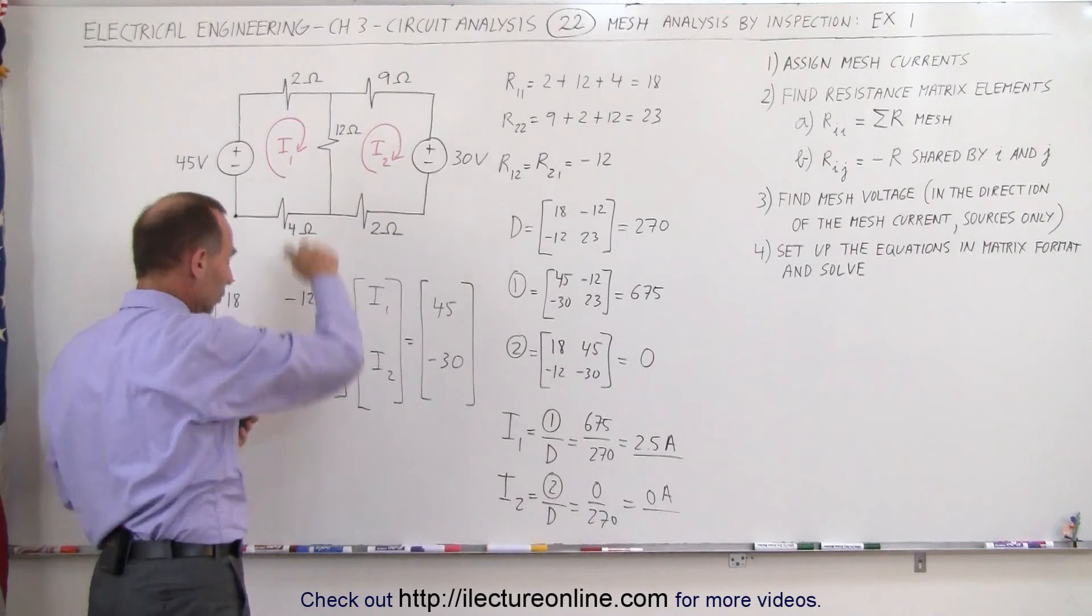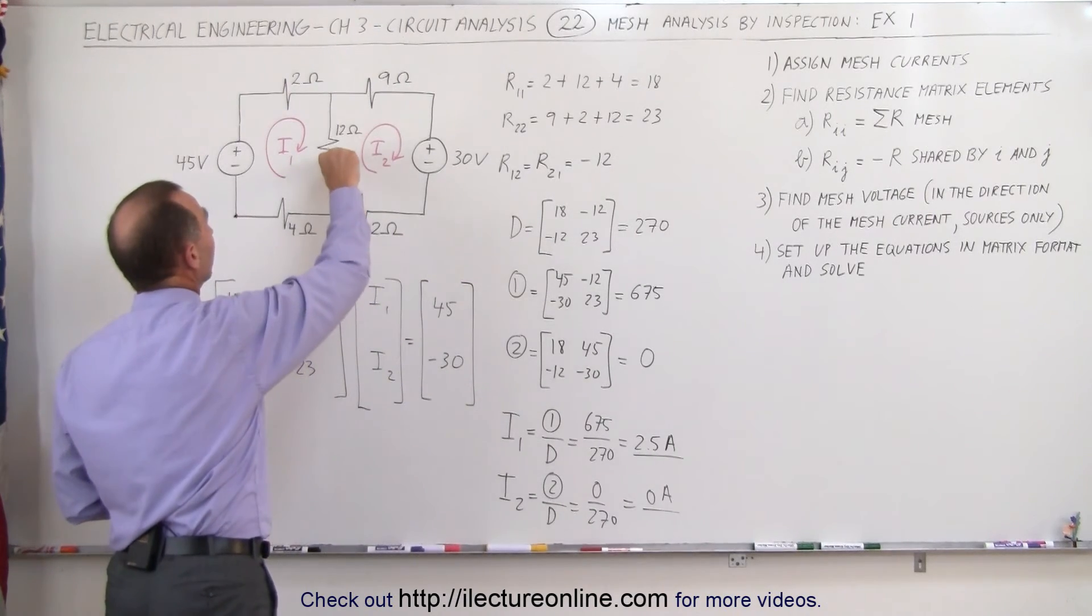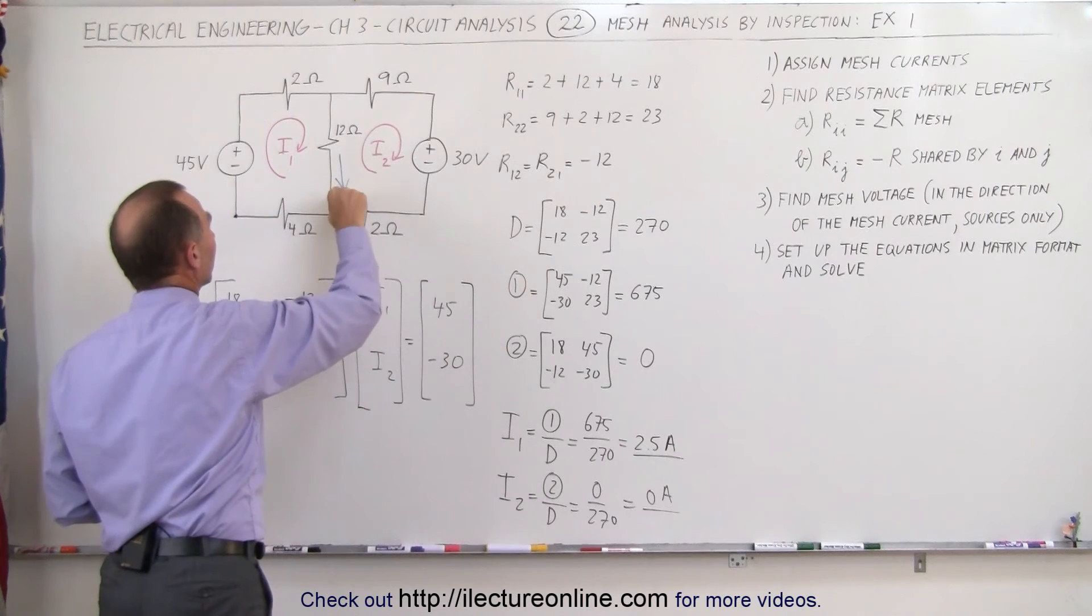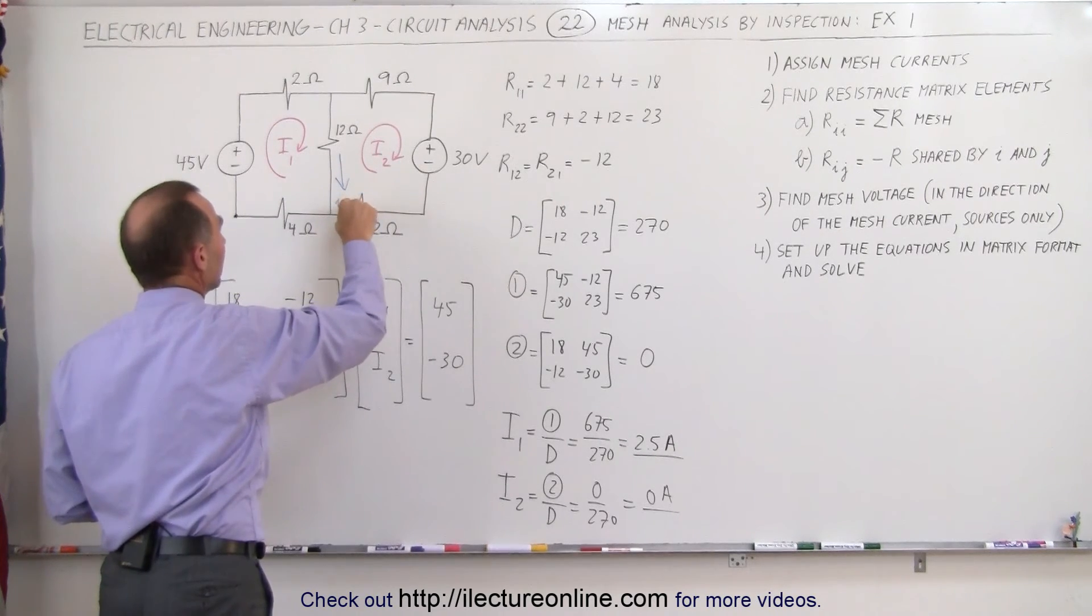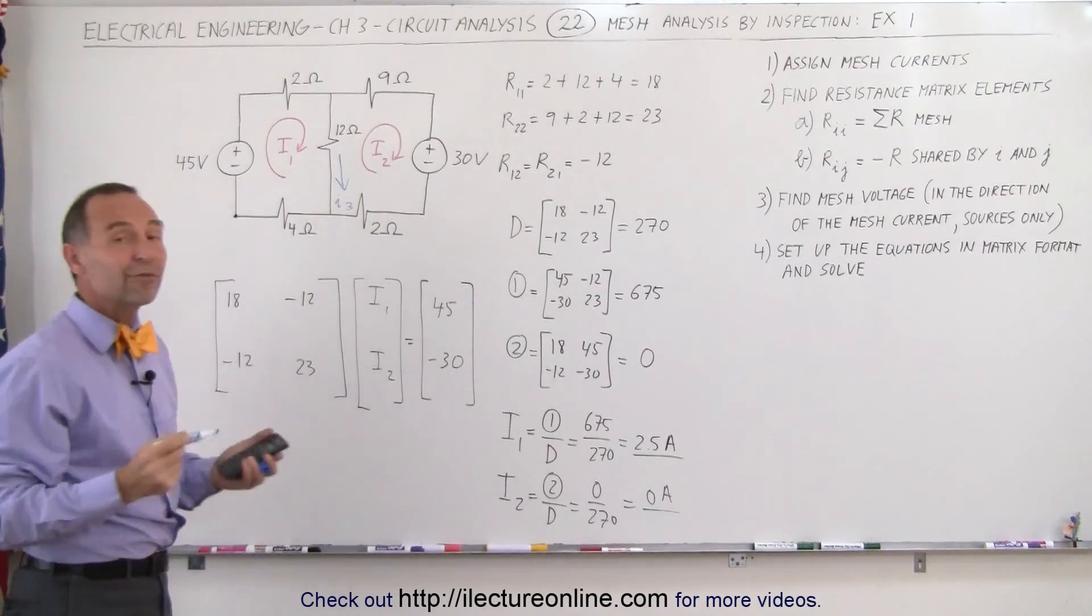Well, the 12 ohm resistor, the current through here—let's go ahead and write that down. Let's assume we have a current in this direction. Let's call it I3 just to make it simpler. I3. How do we find I3? Well, there's two different ways.